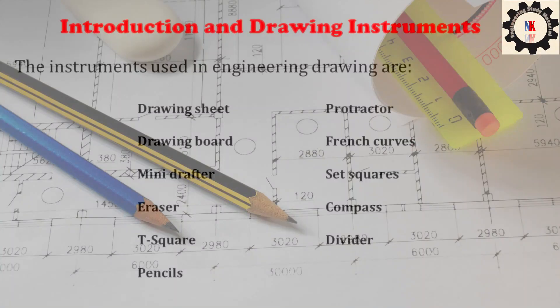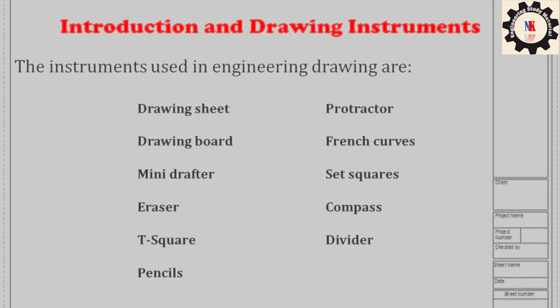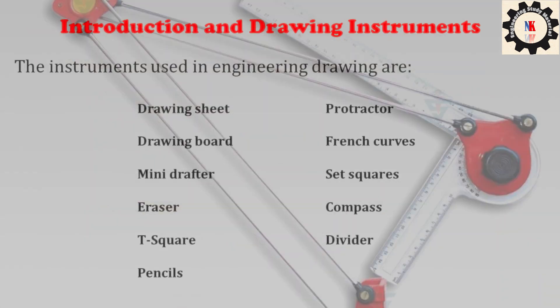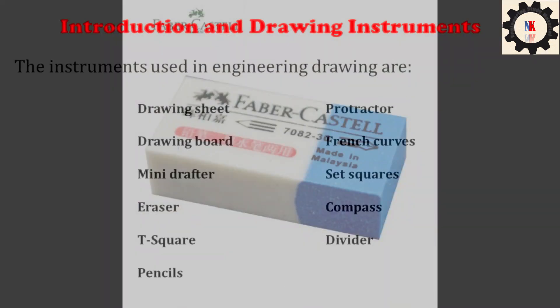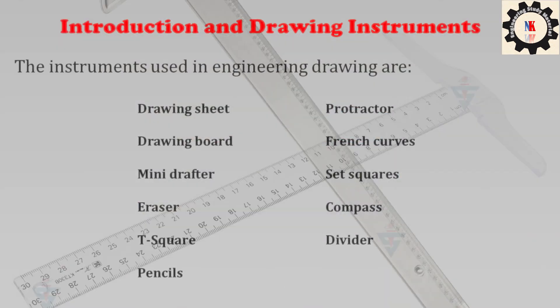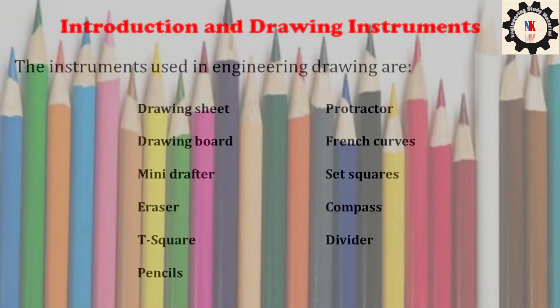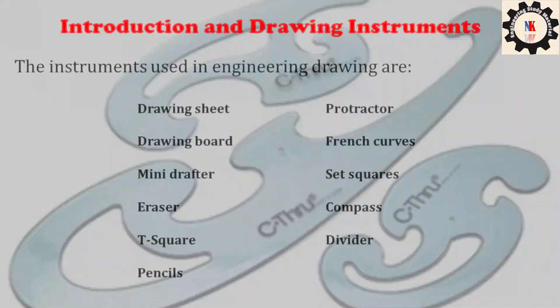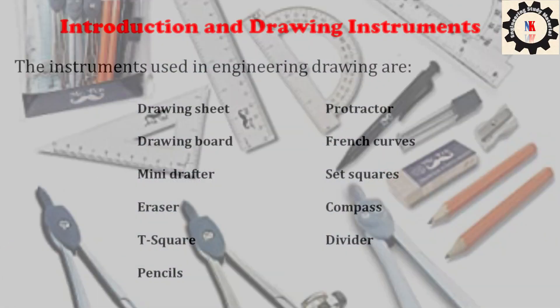The instruments used in engineering drawing are drawing sheet, drawing board, mini drafter, eraser, piece square, pencils, protractor, French curves, set squares, compass, and divider.